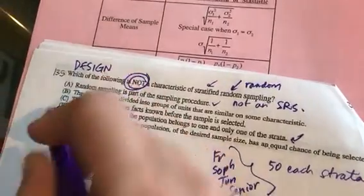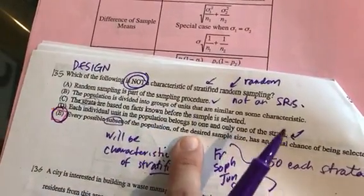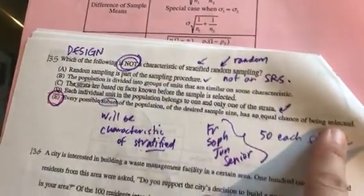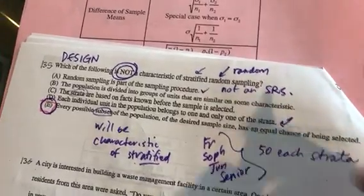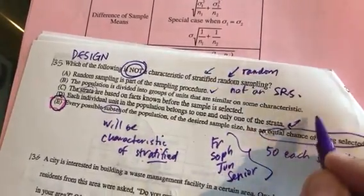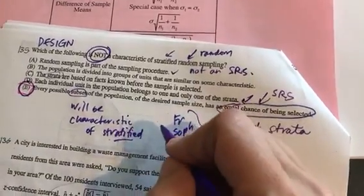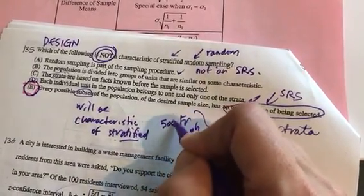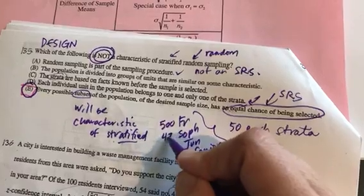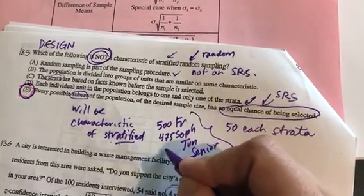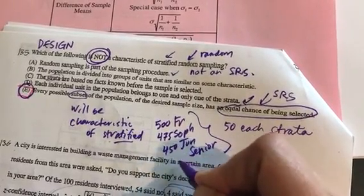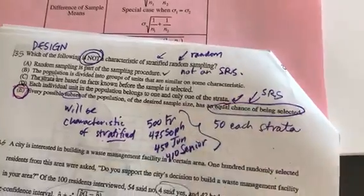So lastly, that leaves us with our answer. It must be E. Every possible subset of a desired sample has an equal chance of being chosen. No, this idea of an equal chance of being chosen is an SRS. And the way to explain this is even at our own school, there's about 500 freshmen, maybe 475 sophomores, 450 juniors, and 410 seniors.